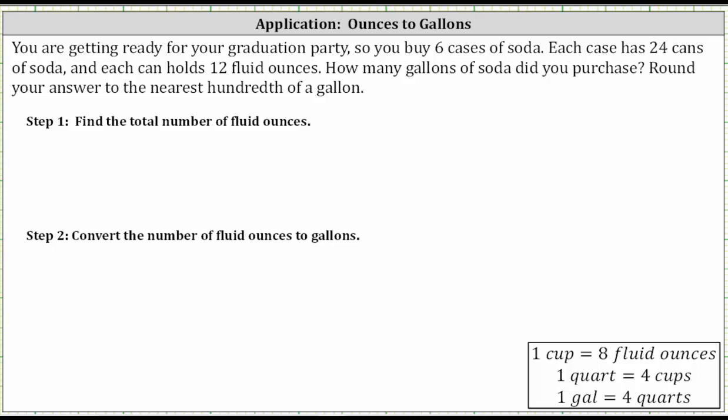You're getting ready for your graduation party so you buy six cases of soda. Each case has 24 cans of soda and each can holds 12 fluid ounces. How many gallons of soda did you purchase? Round your answer to the nearest hundredth of a gallon if needed.